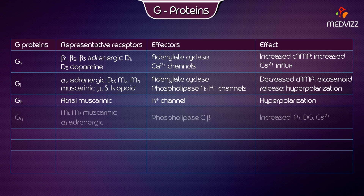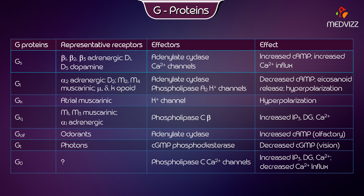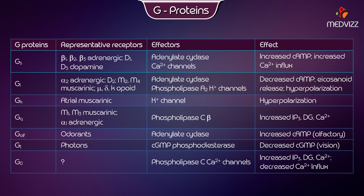G-Protein Gs: representative receptors include beta-1, beta-2, and beta-3 adrenergic, as well as D1 and D5 dopamine receptors. Effectors are adenylate cyclase and calcium channels. The effect is increased cyclic AMP and increased calcium influx.